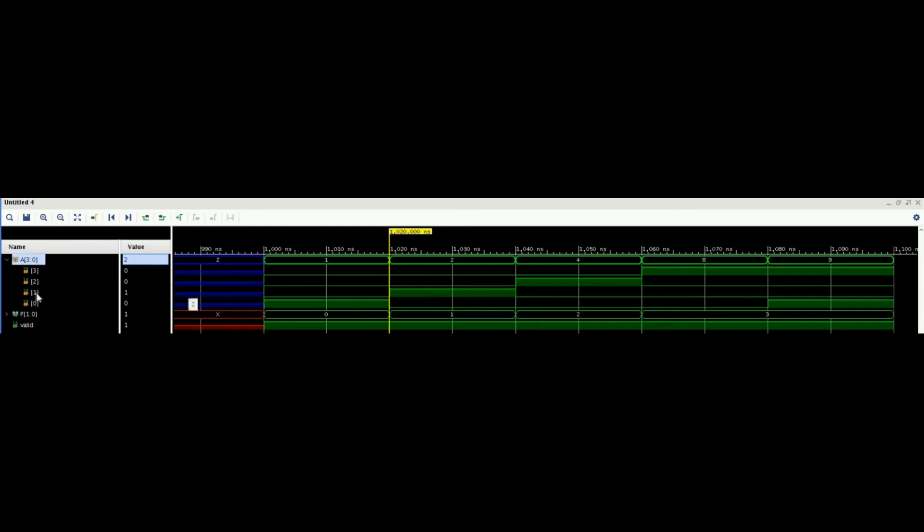When we give input as 2, 2 means A1 bit is high. At the output we are getting index as 1 along with the valid signal. Similarly, when we have given A2 as high, we are getting index 2 at the output.